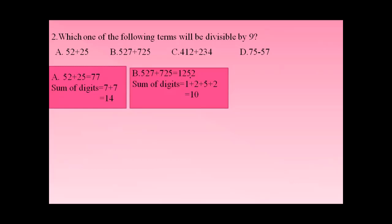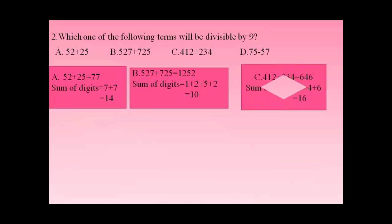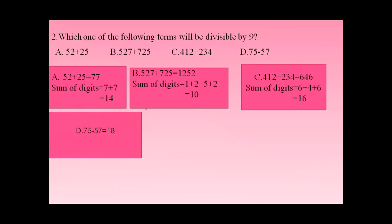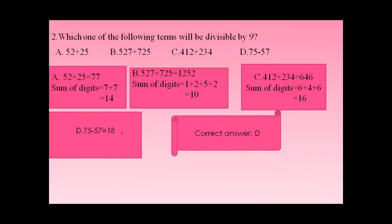Option B: 1252 — sum of digits 1+2+5+2 = 10, not divisible by 9. Option C: 412 + 234 = 646 — sum of digits 6+4+6 = 16, not divisible by 9. Option D: 75 − 57 = 18, and 18 is divisible by 9. So the correct answer is D.